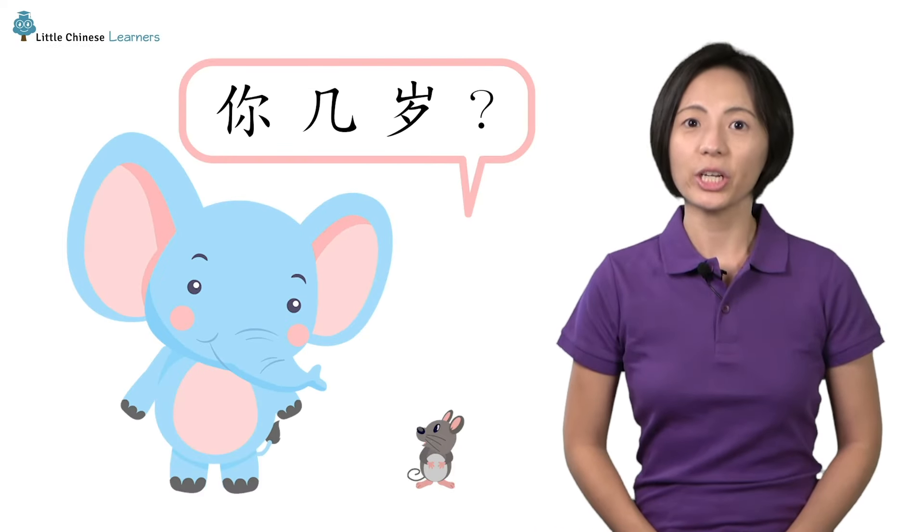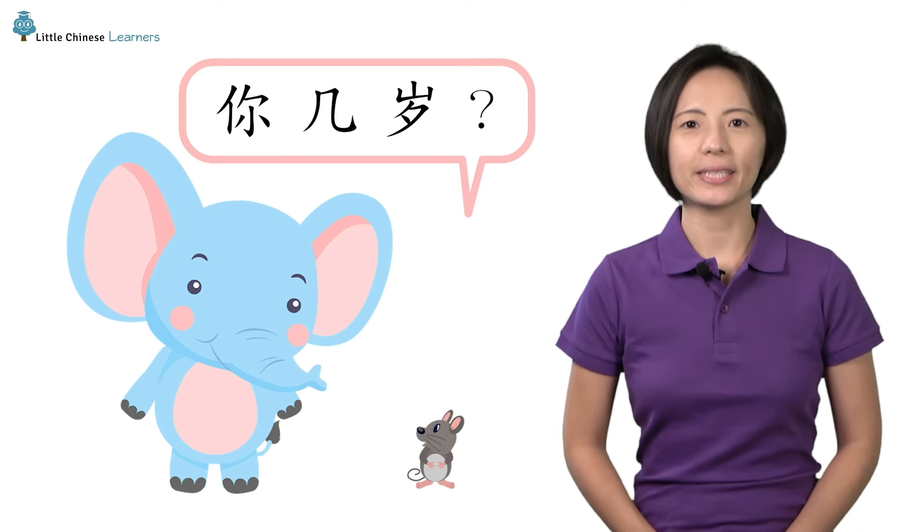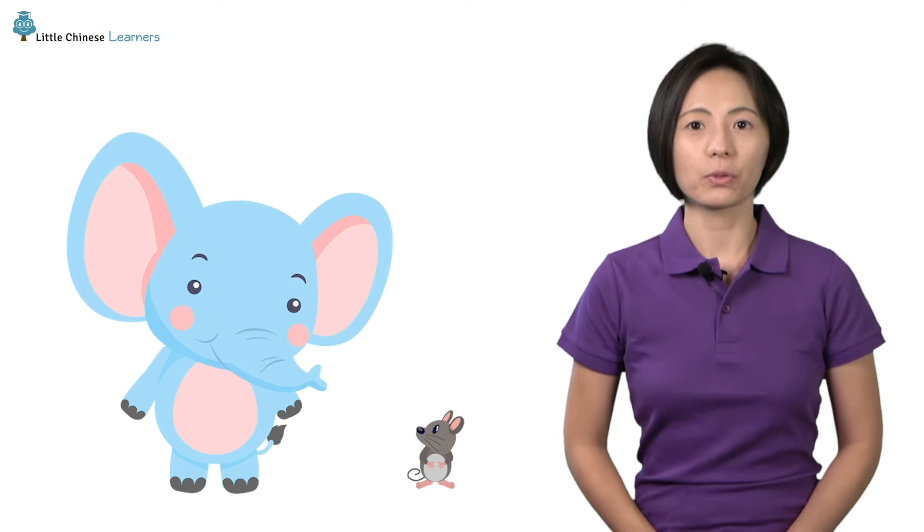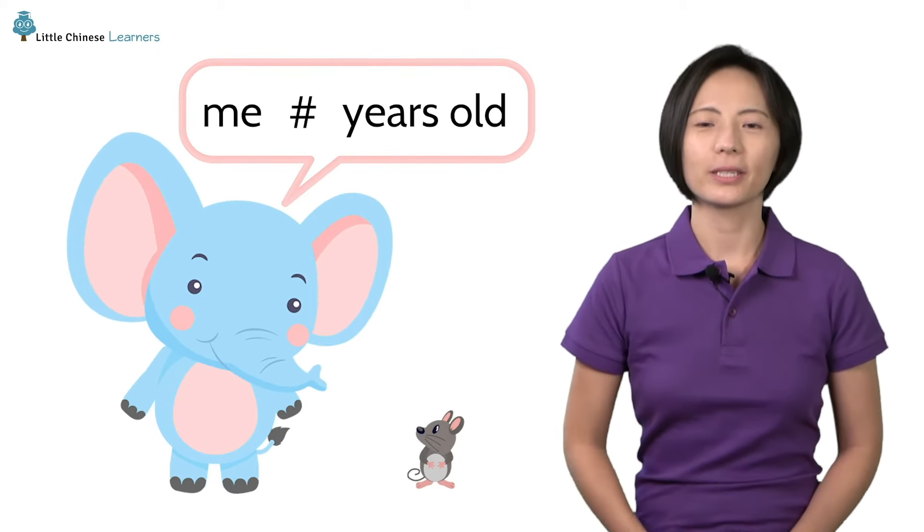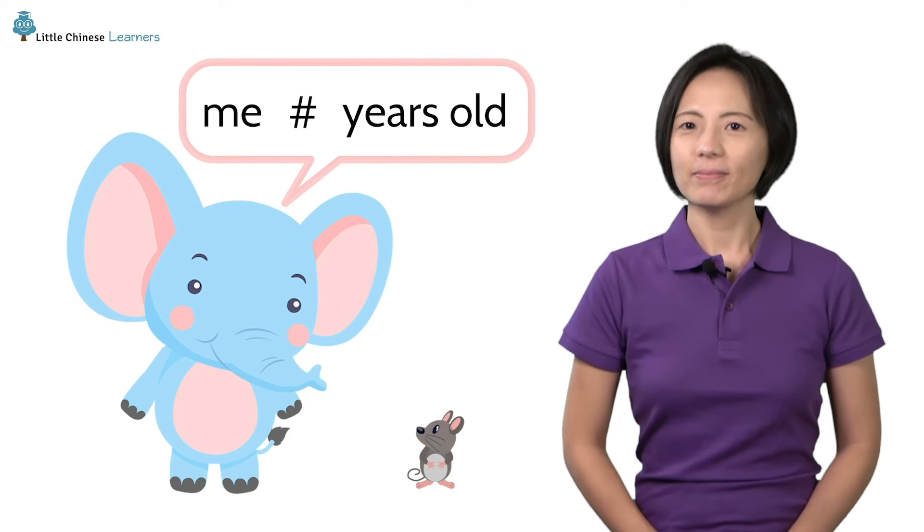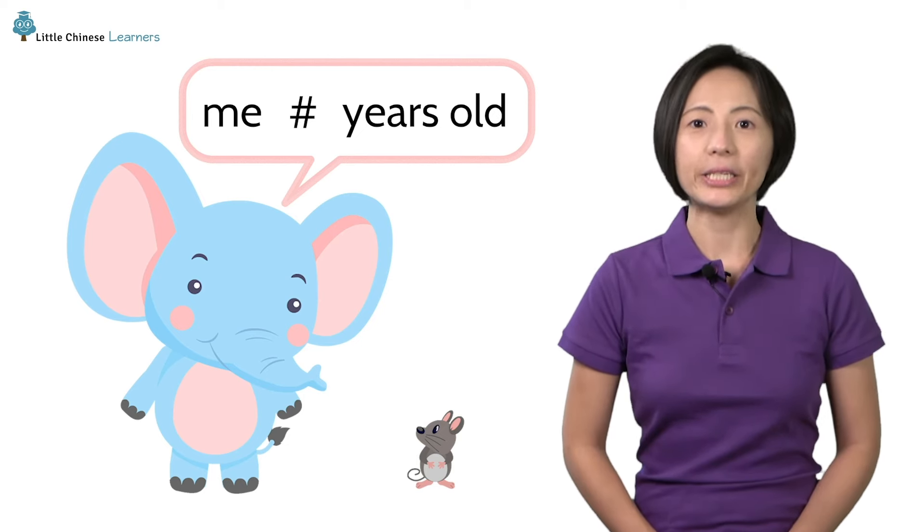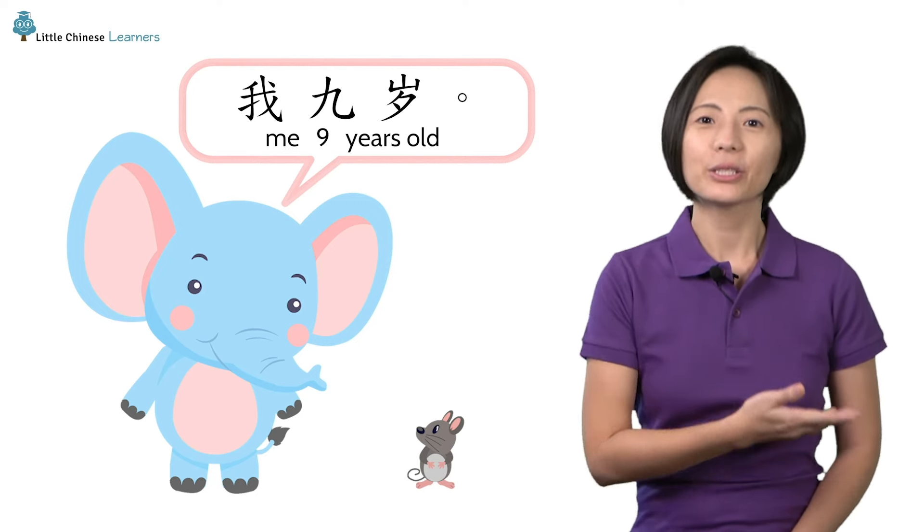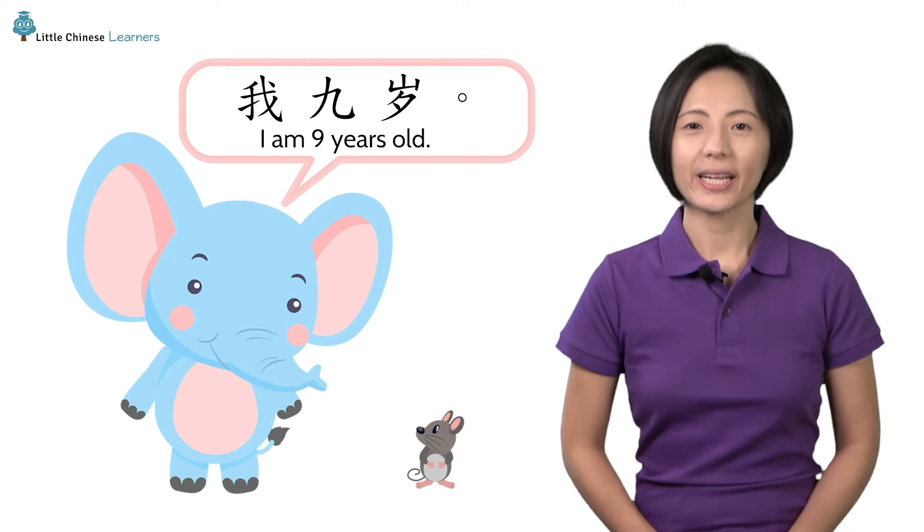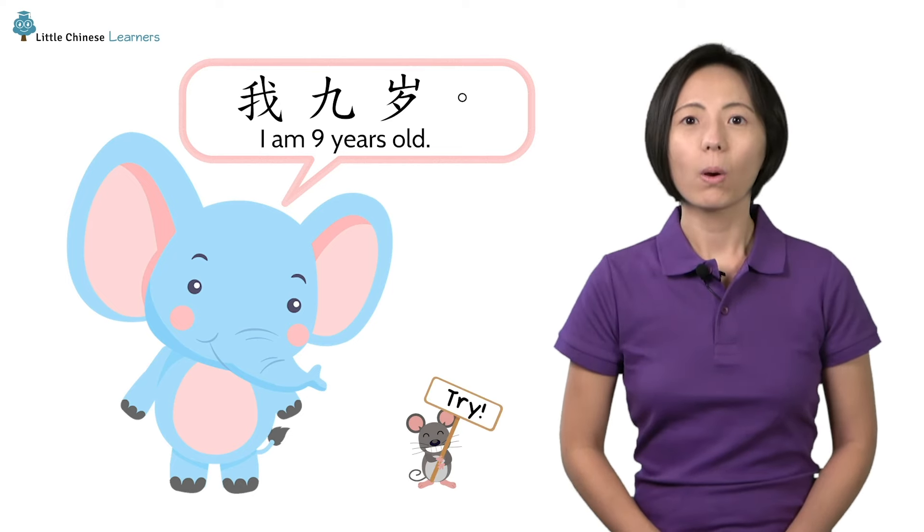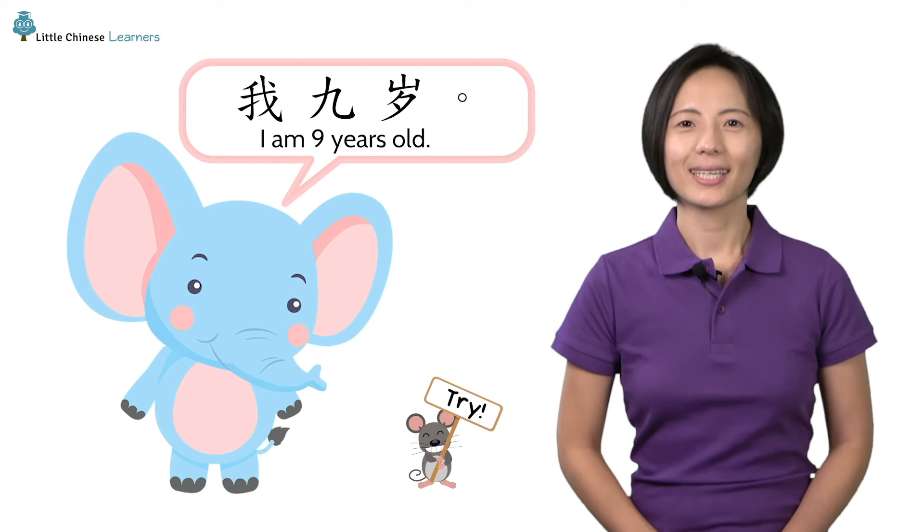If someone asks you that question, how do you tell them how old you are? Let me give you a hint. The English word for word is me, number, years old. Think you got it? Let's try saying, I am 9 years old. 我九岁. Now you try it. Perfect!